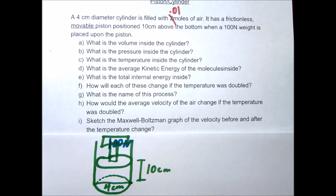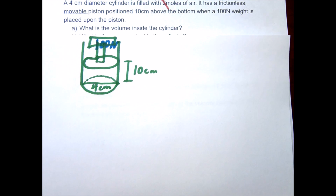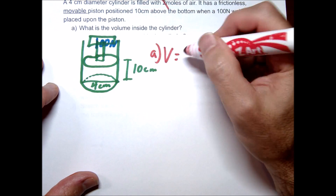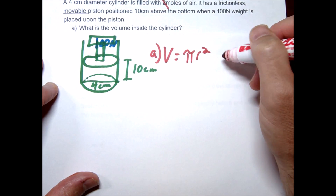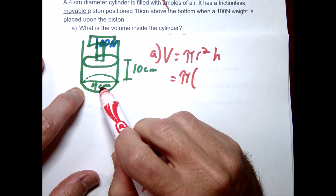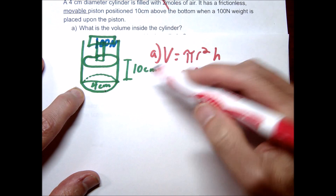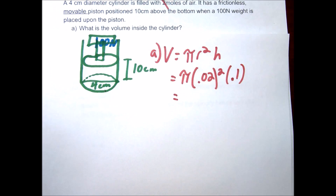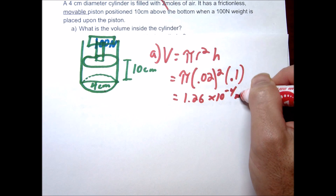Let's go ahead and try this. The first question is solving for the volume — this is basically just a geometry problem. We're going to find the volume of a cylinder: area times height, so pi r squared times height. Our radius is 2 centimeters, which we convert to 0.02 meters, squared, times our height of 0.1 meters. That gives us 1.26 times 10 to the negative 4th cubic meters.